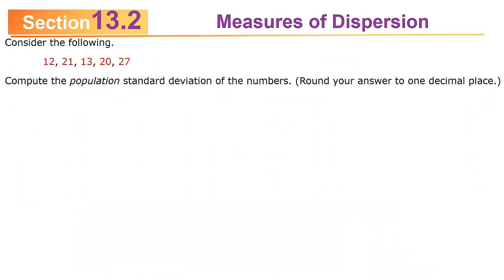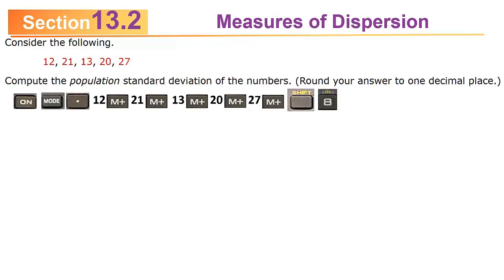Let's look at this example. Consider the following: 12, 21, 13, 20, 27. Compute the population standard deviation of the numbers. Round your answer to one decimal place. Remember, this is a population standard deviation. When you put the numbers in, it's exactly the same as if you're doing the sample standard deviation, except at the end you press shift 8 instead of shift 9. You get approximately 5.535341. Rounded to one decimal place, that's about 5.5.